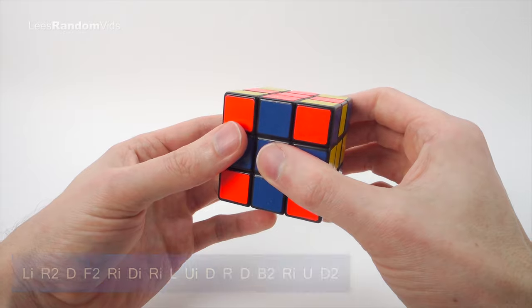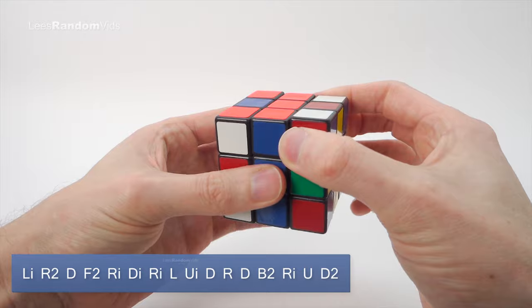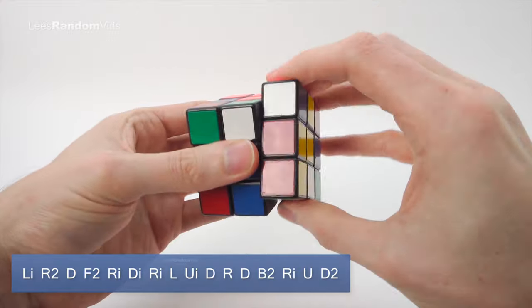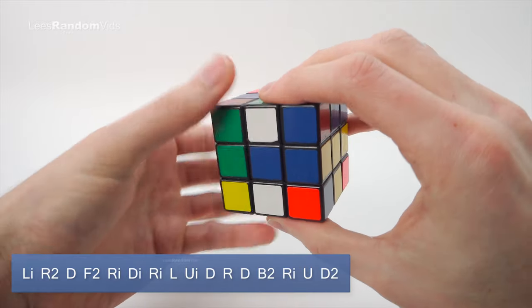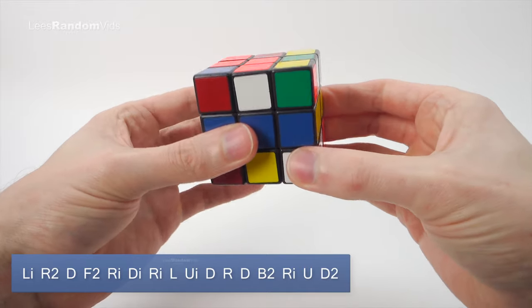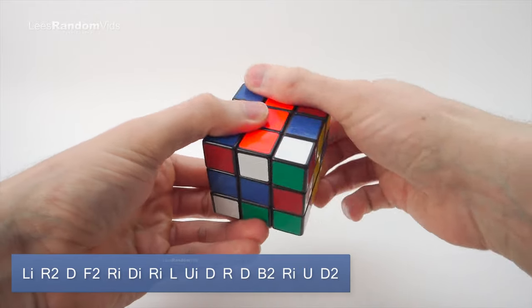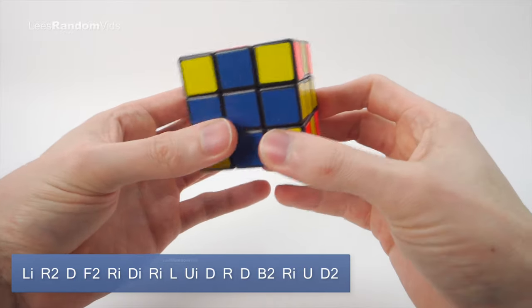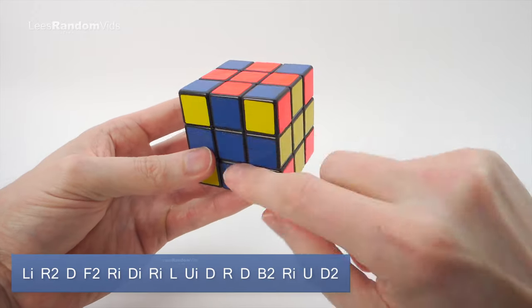So let's do that slow then. We go Li R2 D F2 Ri Di Ri L Ui D R D B2 Ri U D2. And we've still got the cross pattern but the colors are rotated. That's why we need these three,